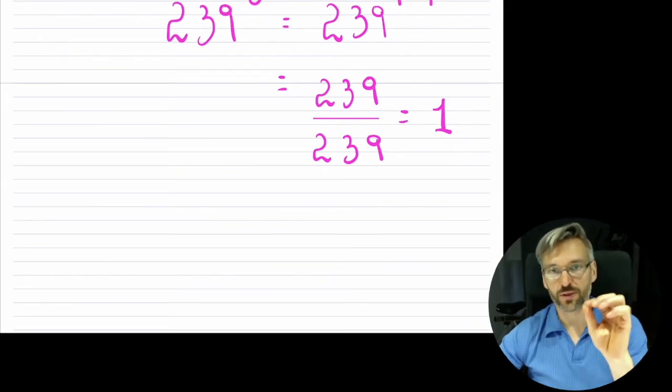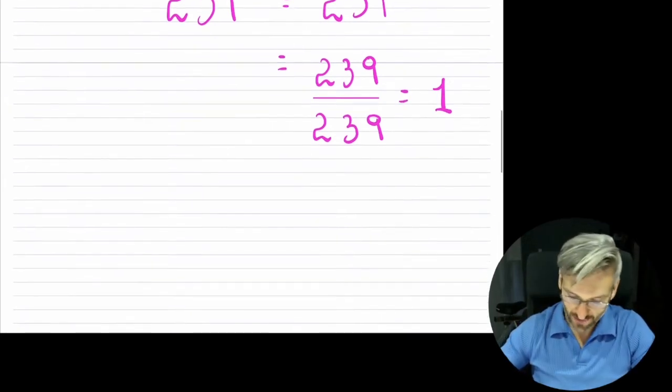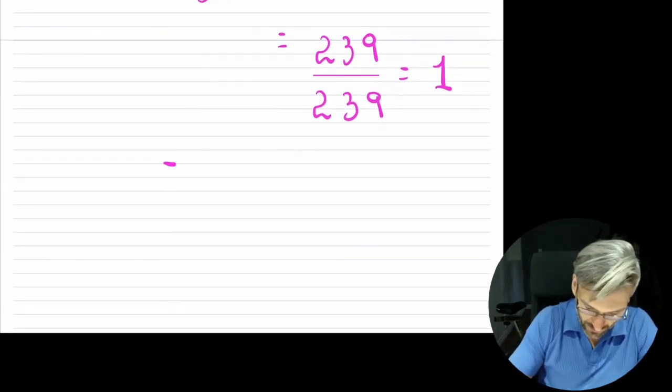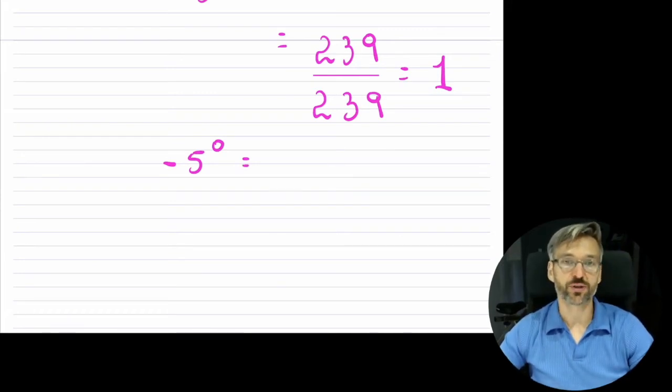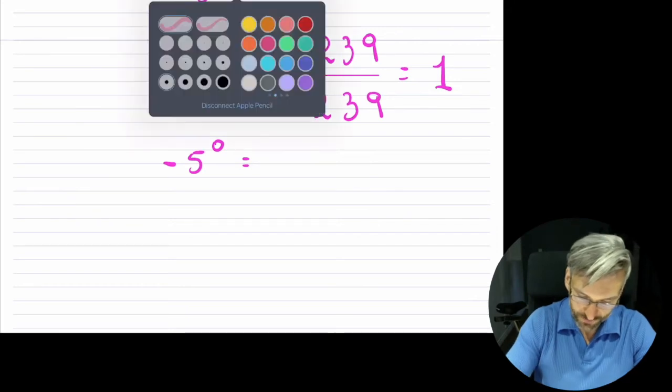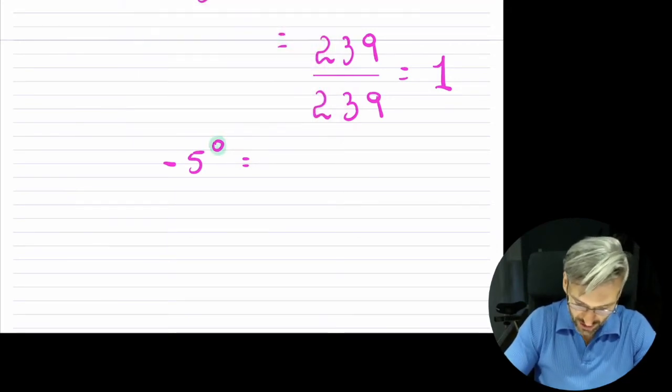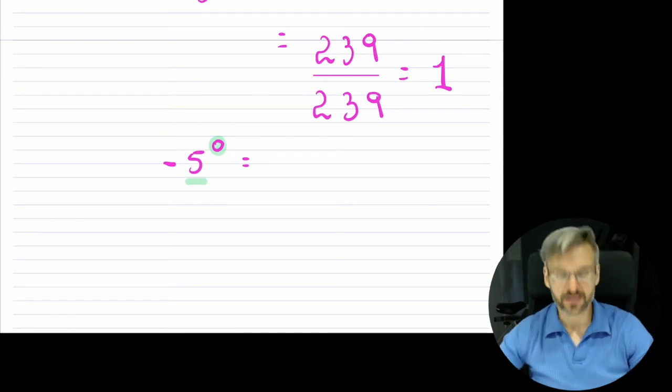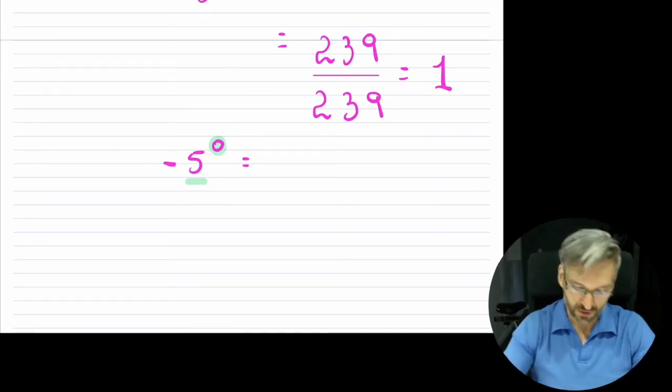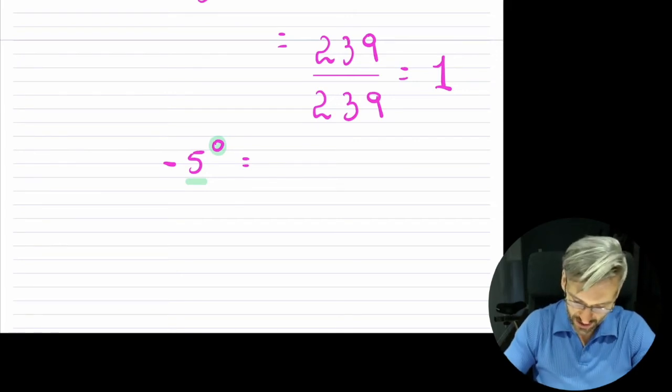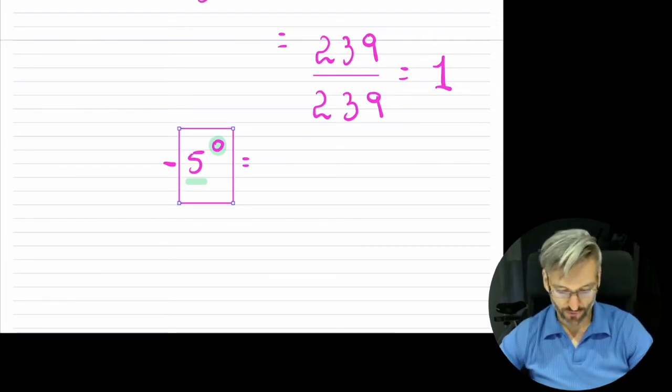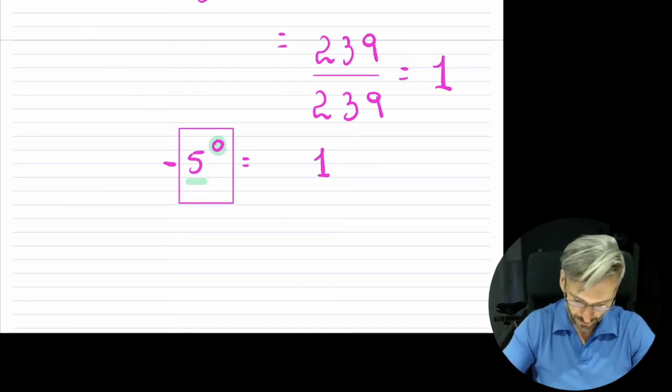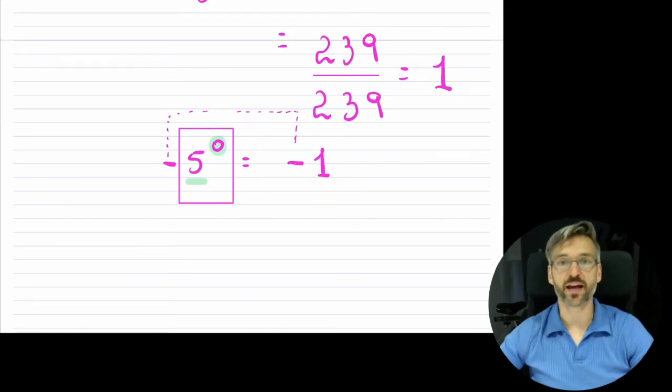The only thing you have to be careful with this power of zero is the fact that if you have, so let's say I will have negative five and I raise it to the zero, here be careful because when you're writing this in math, what we do is we will say that this zero actually applies only to the five. It does not apply to that negative in front. So if that would be the case, then this actually equals, so let me box this in here for you. So five to the zero is equal to one, but then our negative kind of still stays in front. So you have to be careful when you write this.